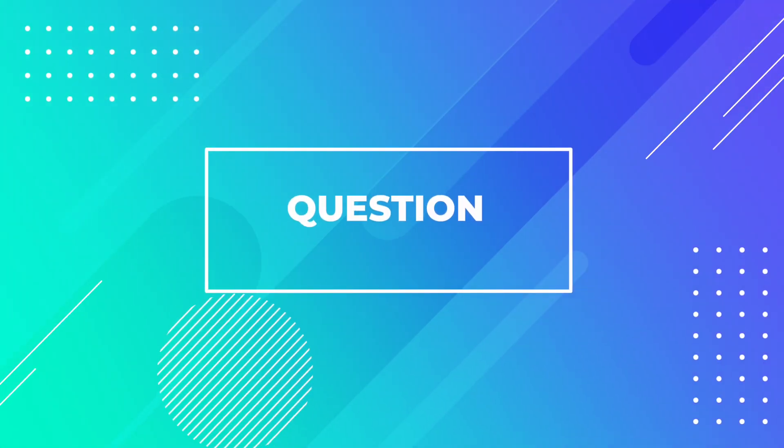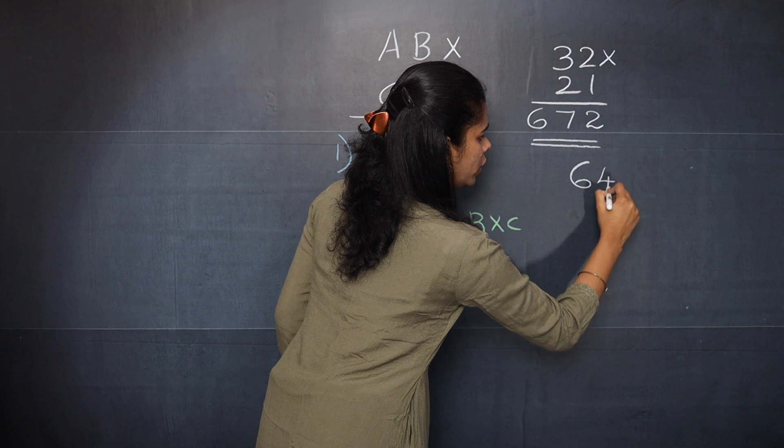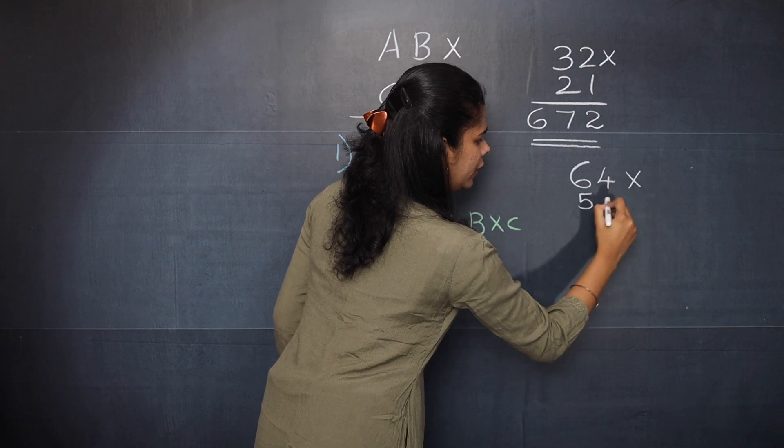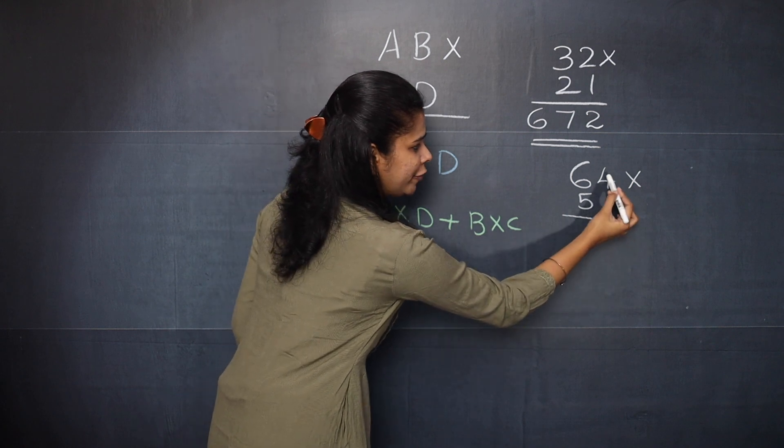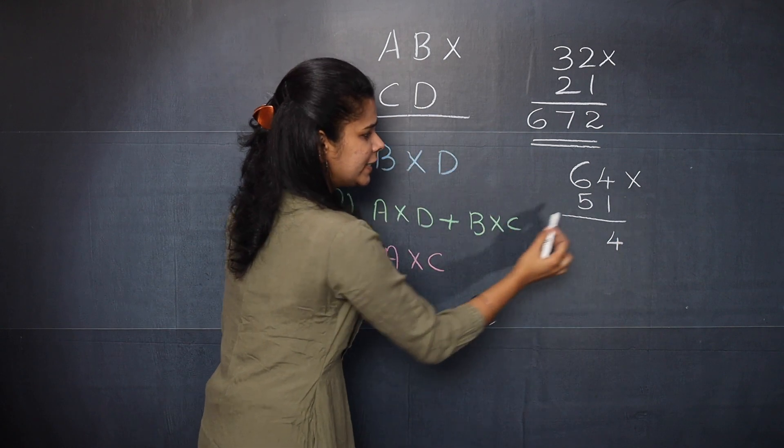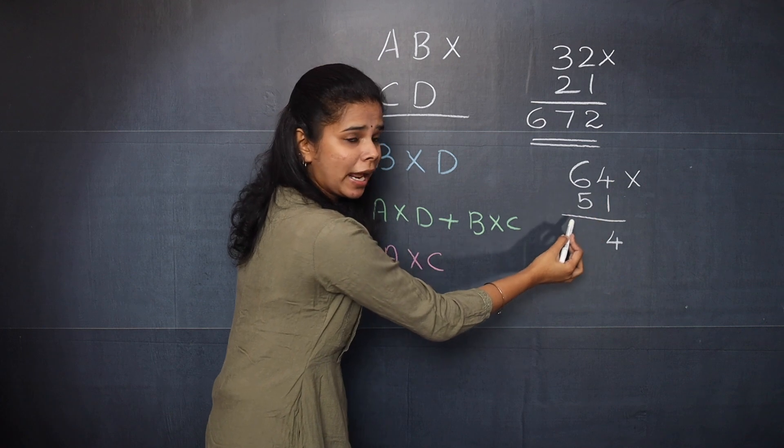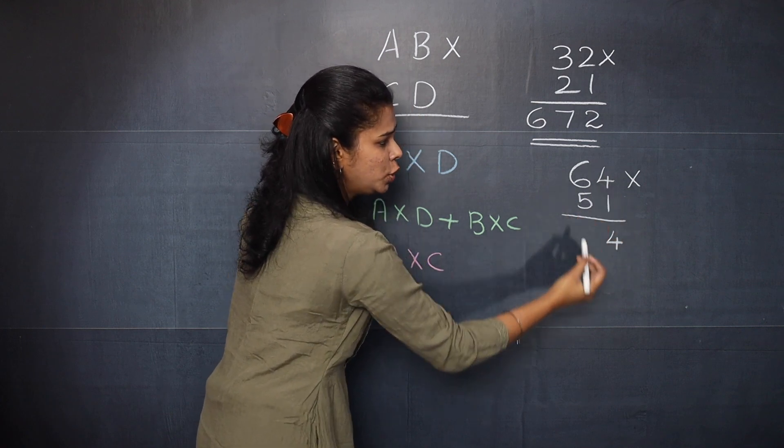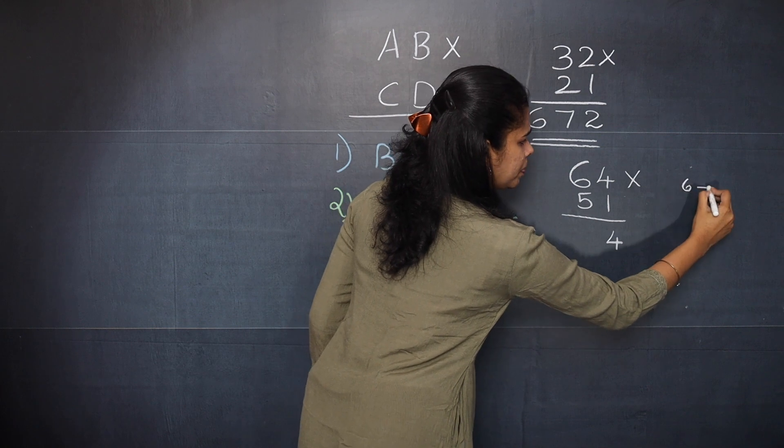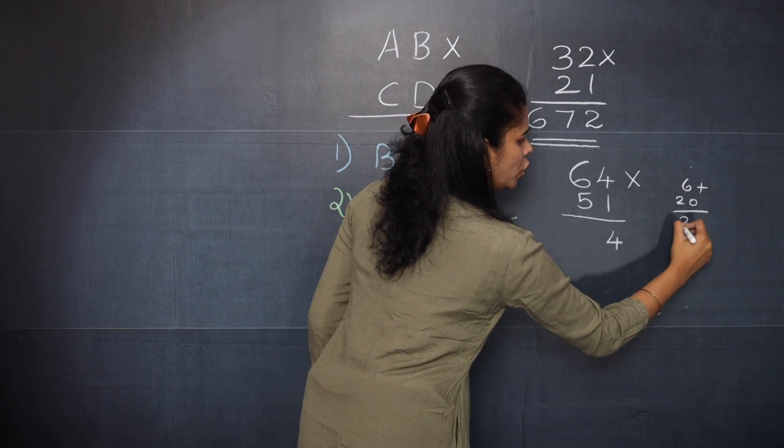Now let's move on to the next question. 64 multiplied by 51. So from the first step you will get 4 into 1, 4. So the second step you need to cross multiply and add. So 6 into 1, 6. Plus 5 into 4, 20. So 6 plus 20 will give you 26.